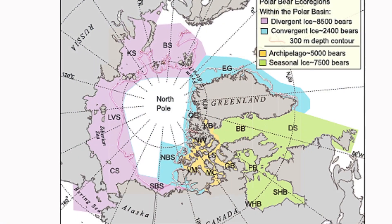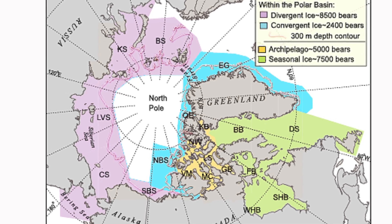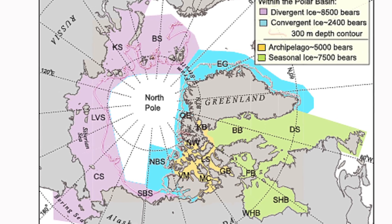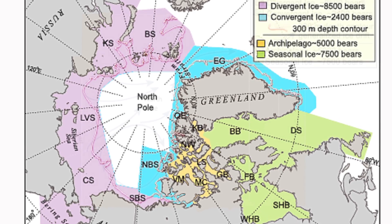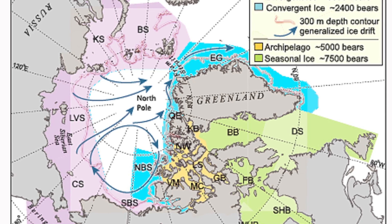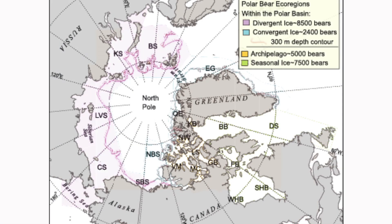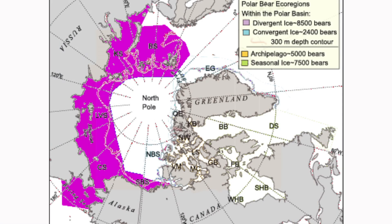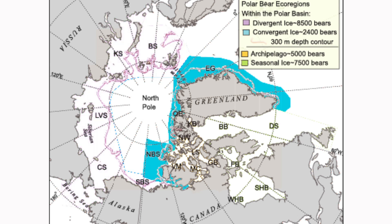But a lot of that ice piles up on the north coast of Greenland and the northern part of the Canadian Arctic islands. Where it piles up — where that ice converges — I have called the convergent ice ecoregion. So in the polar basin we have the divergent ice ecoregion, where ice is always moving away, and the convergent ice ecoregion, where it piles up.